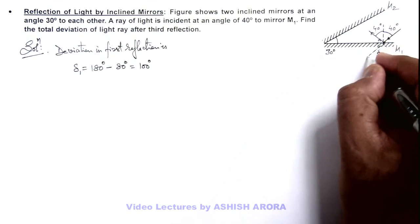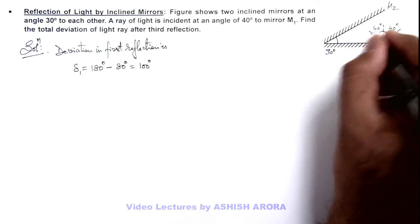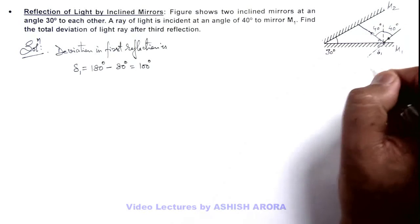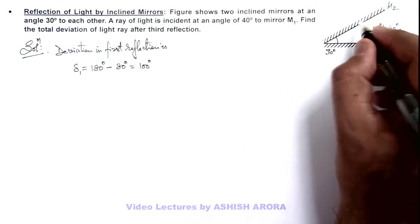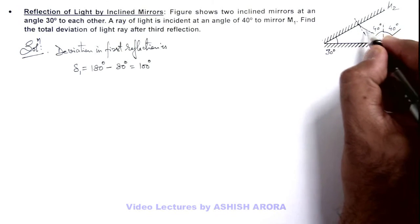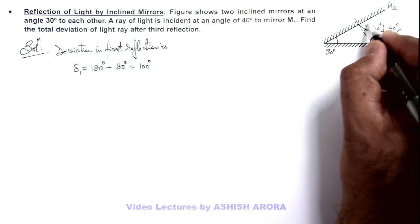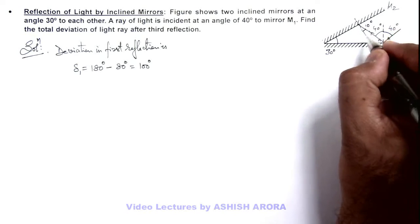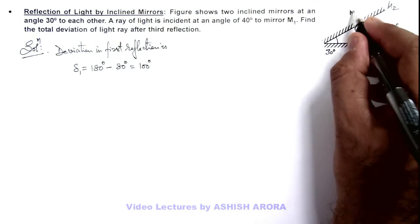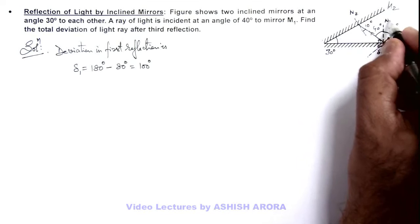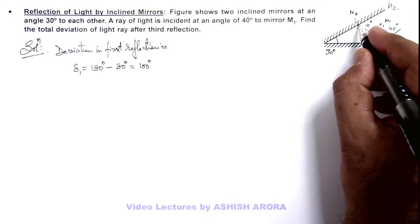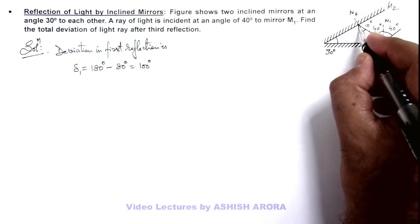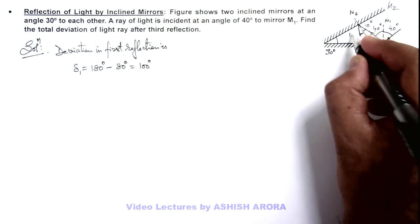This is the original direction from where it is reflected, and the light is incident on the second mirror. As this angle is 30 degrees and this is 40 degrees, the light is incident at an angle of 10 degrees onto the normal of mirror M2. This is normal 1 and this is normal 2. The light ray is finally reflected at the same angle of 10 degrees.